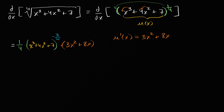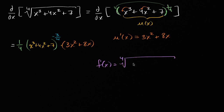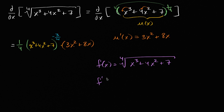So if someone were to say: f of x is equal to the fourth root of x to the third plus four x squared plus seven, and then asked what is f prime of negative three — well, you would evaluate this expression at negative three.